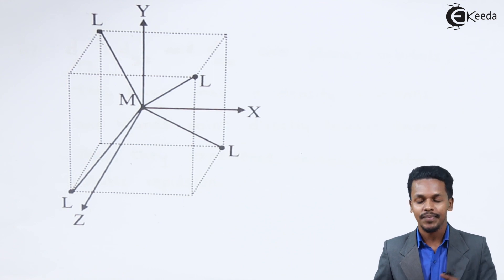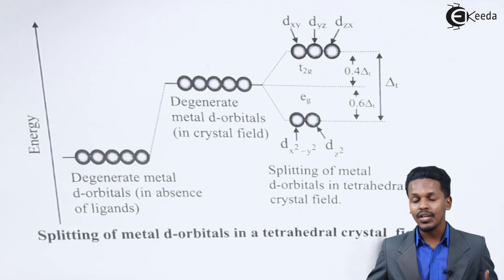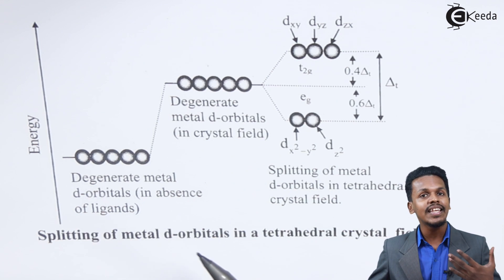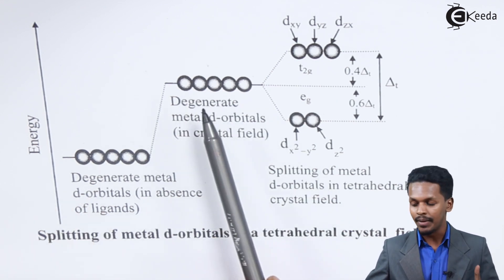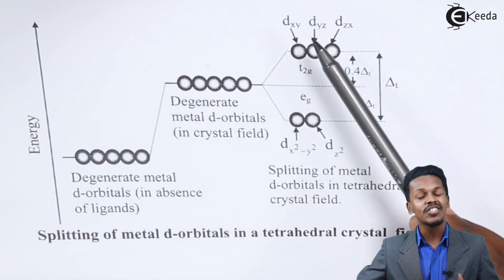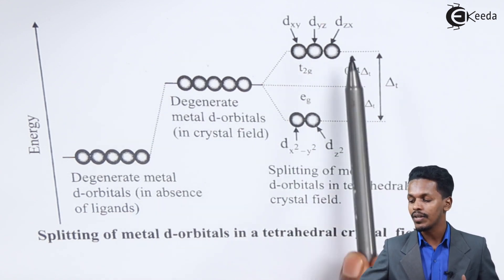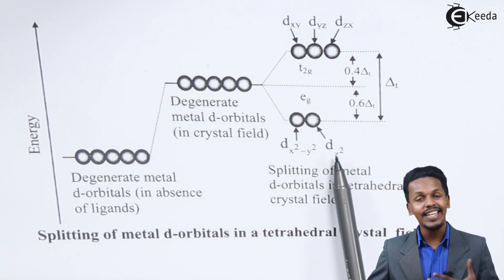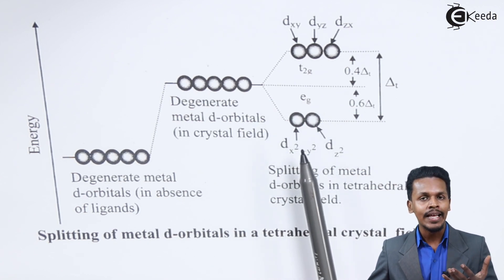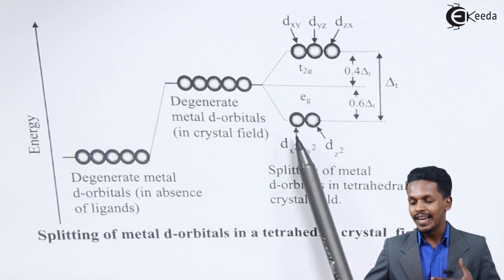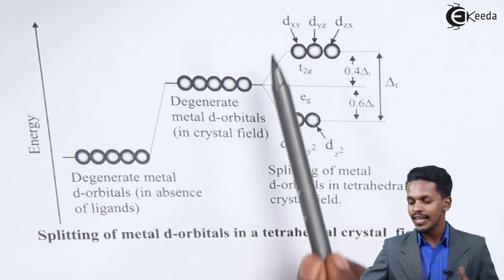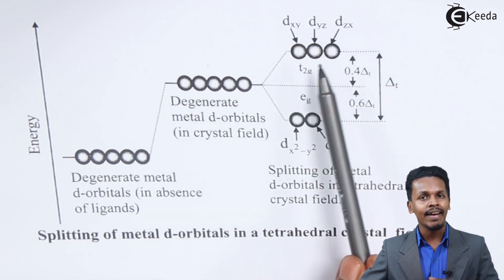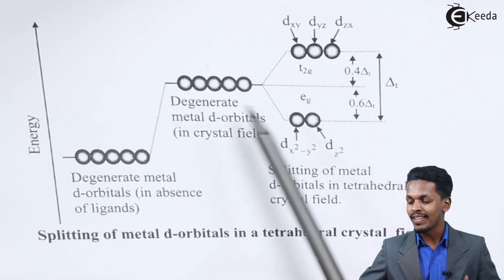The splitting of the metal d orbitals in the tetrahedral crystal field works as follows: the degenerate metal d orbitals in the absence of ligands split into two energy levels when ligands approach. The eg level contains dx²-y² and dz², which experience minimum repulsion and therefore have lower energy. The t2g level contains dxy, dyz, and dzx, which experience maximum repulsion.